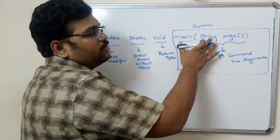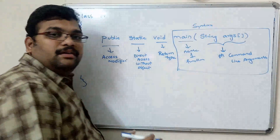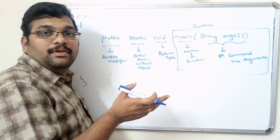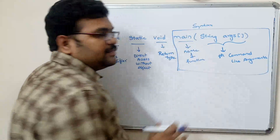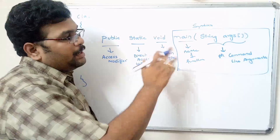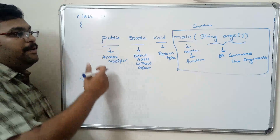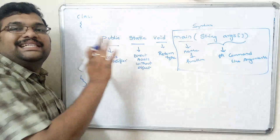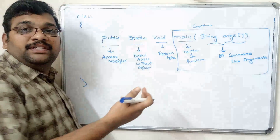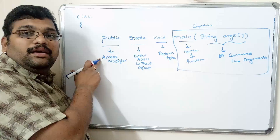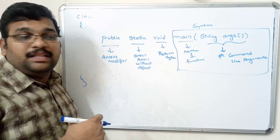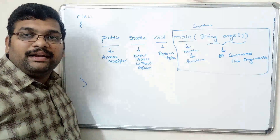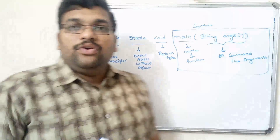If you fail to write String args, it won't return a compilation error but the program will not execute. So the full syntax is public static void main — this is the actual importance of this statement. Public is for accessing main from all classes, static is so we can access main without any object, and void is the return type because every function should have one.